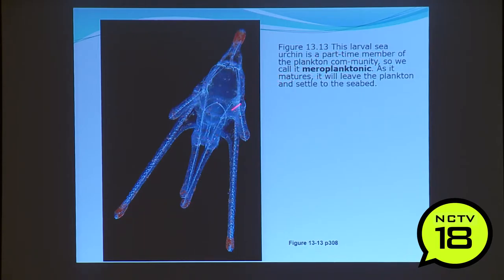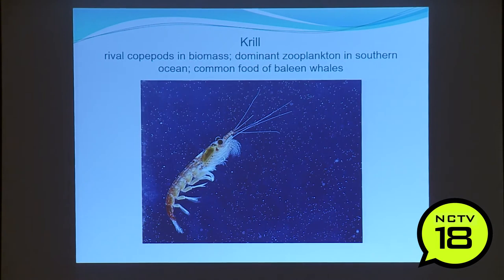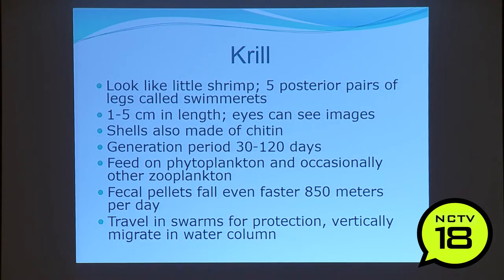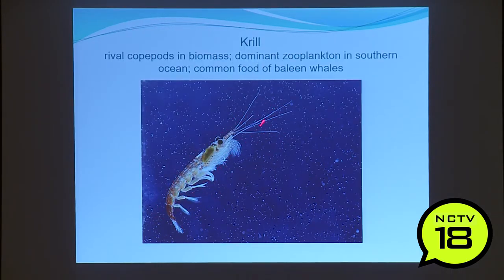A sea urchin is a meroplanktonic organism — almost all cool bottom-dwelling things lived as plankton for part of their life. Krill are the second most important zooplankton after copepods — they look like little shrimp, one to five centimeters in length, easily visible. Their shells are also chitin. Generational periods are 30 to 120 days; they feed on phytoplankton, and their heavier fecal pellets sink faster. They travel in swarms and vertically migrate. Krill rival copepods in biomass — there are more krill than people.